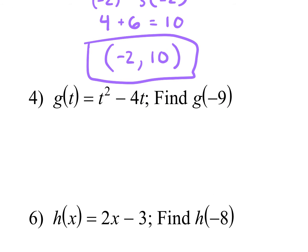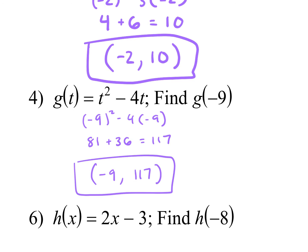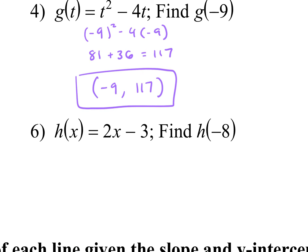For number 4, what should I do first? Plug it in. Negative 9 squared minus 4 times negative 9. What is negative 9 squared? Negative 9 times negative 9 is 81. What's negative 4 times negative 9? Positive 36. 81 plus 36 is 117. So how would I write my answer? Negative 9 comma 117.